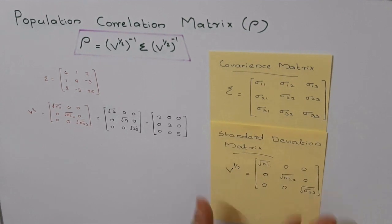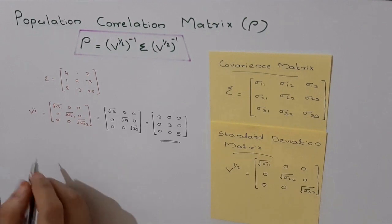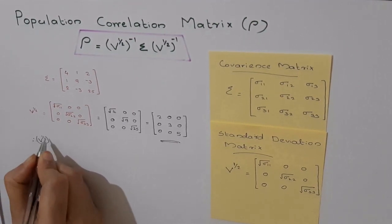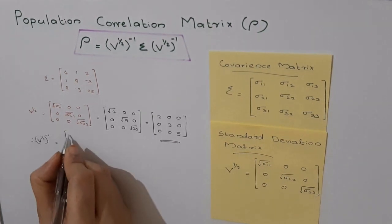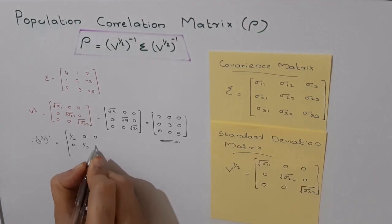Now we go to V^(1/2) inverse, which is just the reciprocal of the values of V^(1/2). So that means matrix [1/2, 0, 0; 0, 1/3, 0; 0, 0, 1/5].